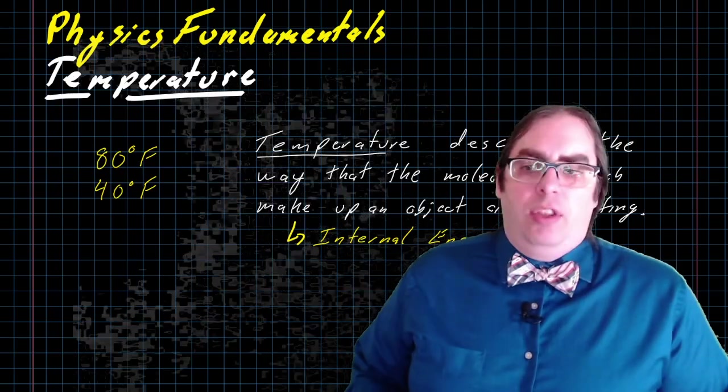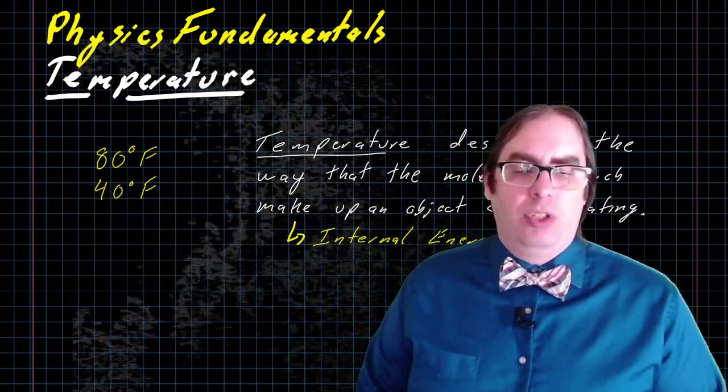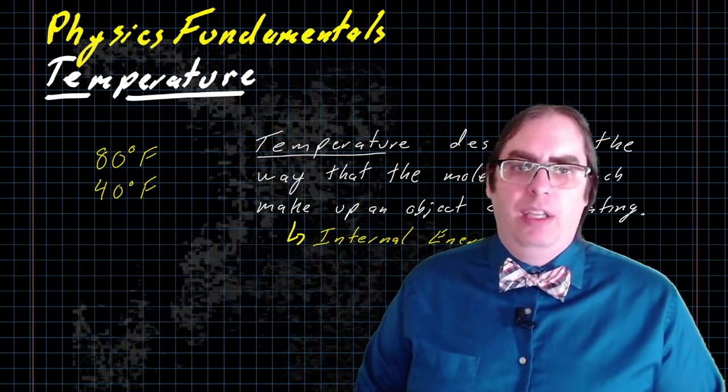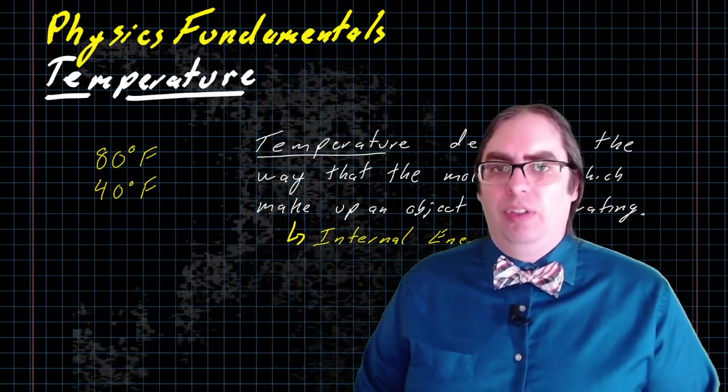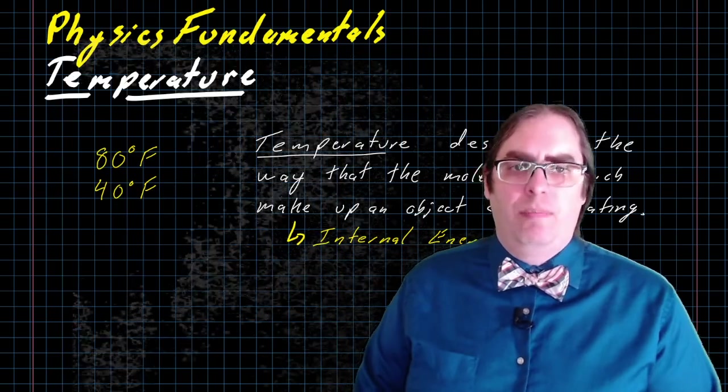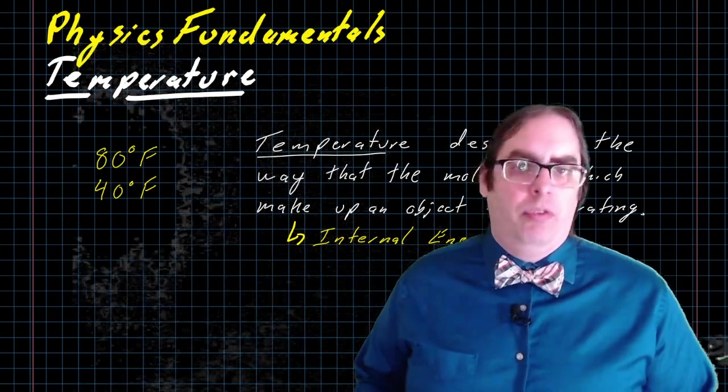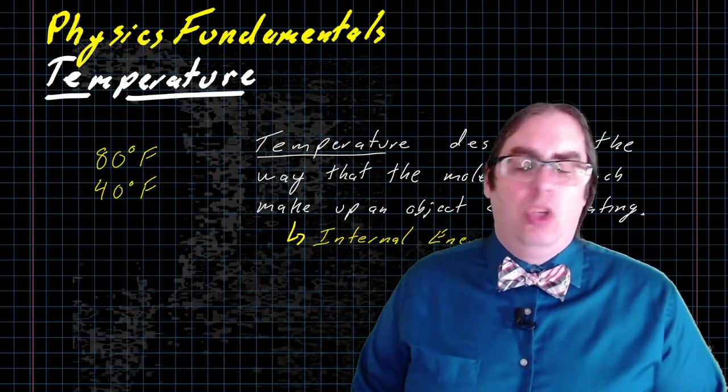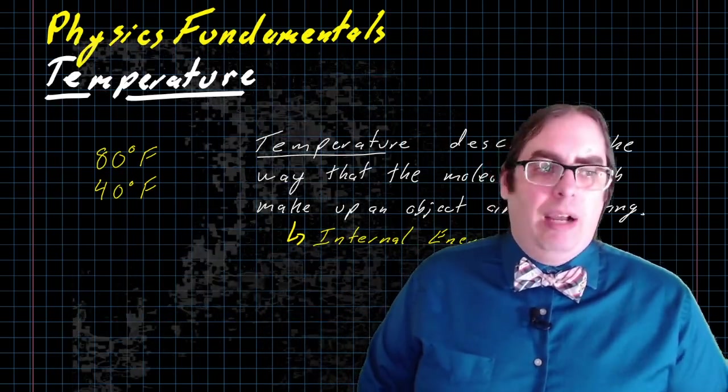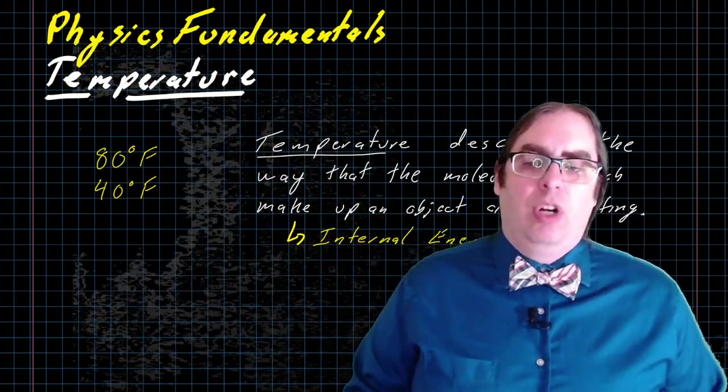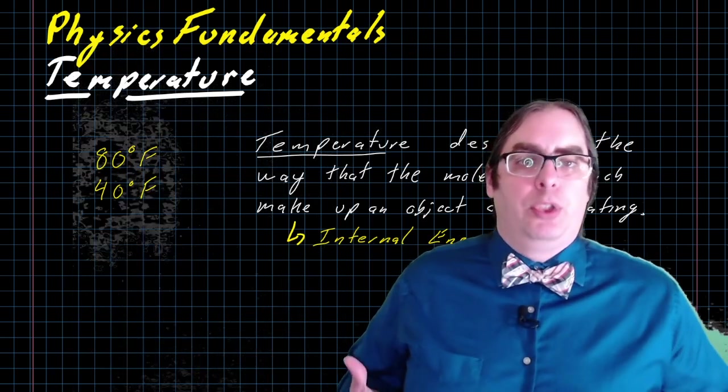That's not to say that the two aren't related. There is a direct relationship between temperature and internal energy of an object. As the internal energy increases, the temperature increases. As the internal energy decreases, the temperature decreases. The problem is that those rates are dependent on a lot of different parameters. So a temperature for a block of steel describes internal energy differently than a temperature of a piece of wood or a temperature of a glass of water.